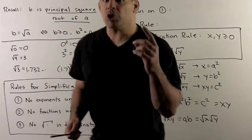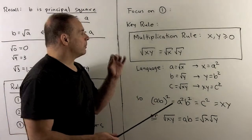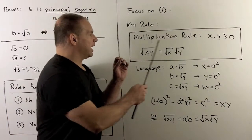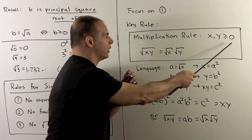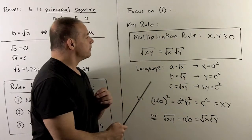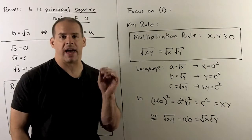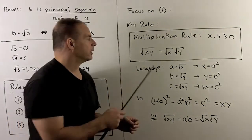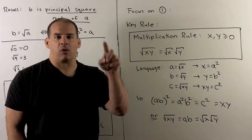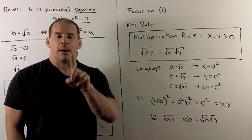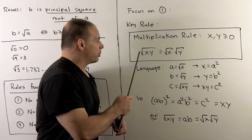For the first part, the key tool is the multiplication rule. If we have x and y greater than or equal to zero, the rule says the square root of x times y is equal to the square root of x times the square root of y. So if I want to work with an expression under a radical, I'm allowed to break it up into several radicals as a product.